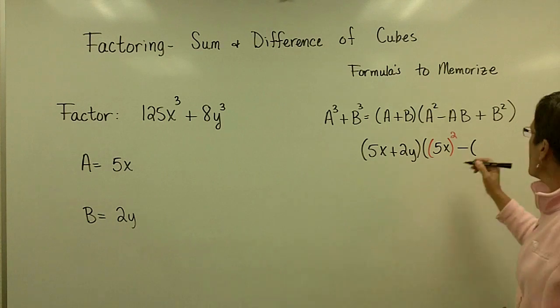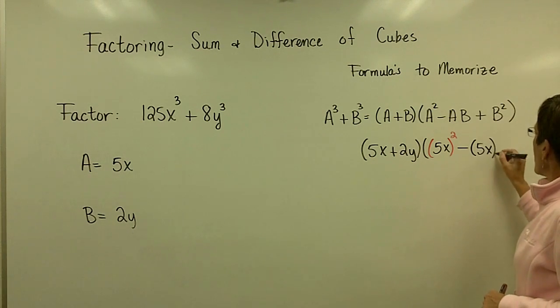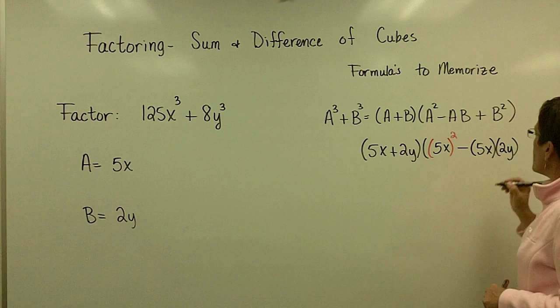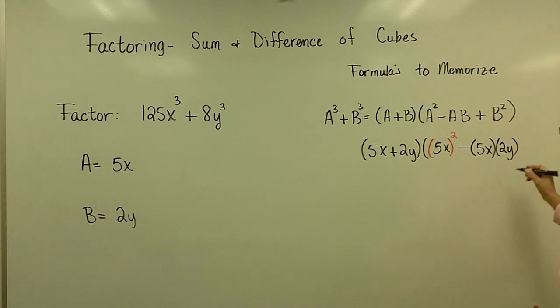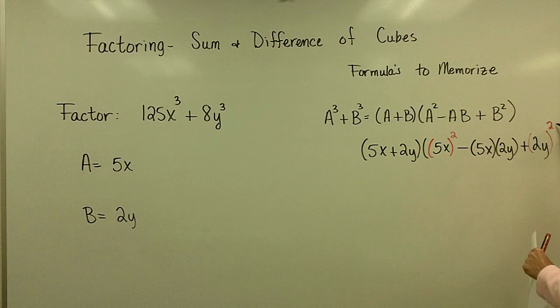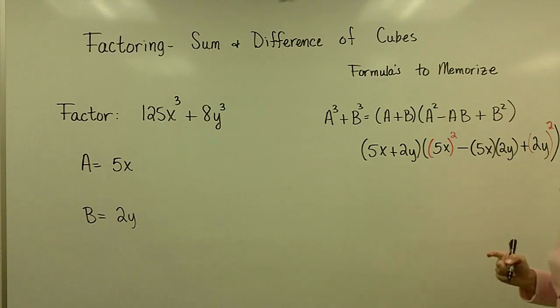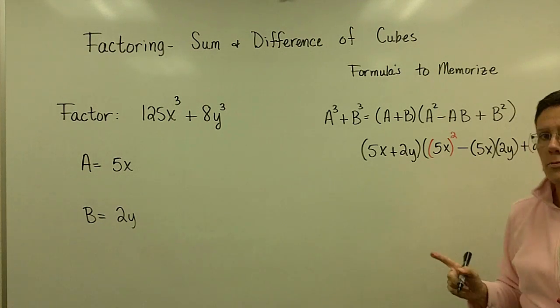My A value over there is 5x. My B value is 2y. I will multiply those together in a minute and call those 10xy with that minus sign in between. This is always a plus sign. And my B value is 2y, but I want to square that. And so that's going to be 2y times 2y, which is 4y squared.